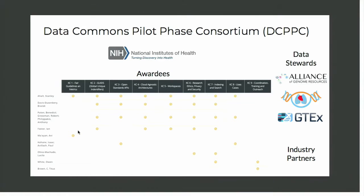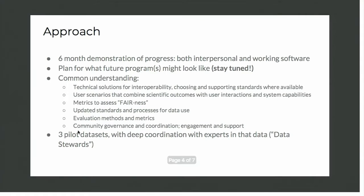These columns in the matrix are nine key capabilities — efforts to think about things that aren't quite standards, but just best practices, aligned interests, and approaches we can take to demonstrate benefits moving forward. There are three pilot datasets on the right: the Alliance of Genome Resources and Model Organism Databases, the TOPMed dataset, and the GTEx dataset, which we're using to pilot the system over the first six-month period. We're then planning for what future programs might look like, which will likely include broader beta participation for the community.